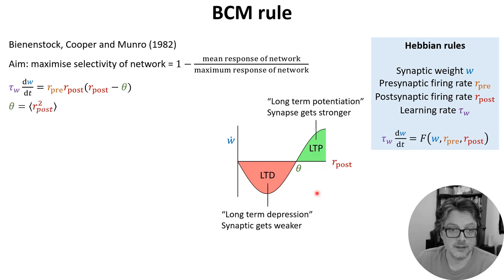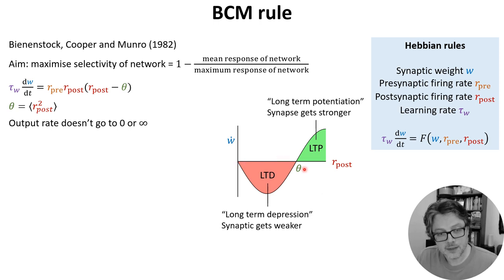So they made theta into a dynamic variable that averages the square of the postsynaptic firing rate. If you imagine a learning environment where different inputs are constantly being presented, you can imagine this either as a running average over time or as a running average over the whole data set. Now, if r_post gets too large, the threshold will increase. This threshold will increase, and the sign of the weight change will switch to negative, and the synapse will start to weaken.